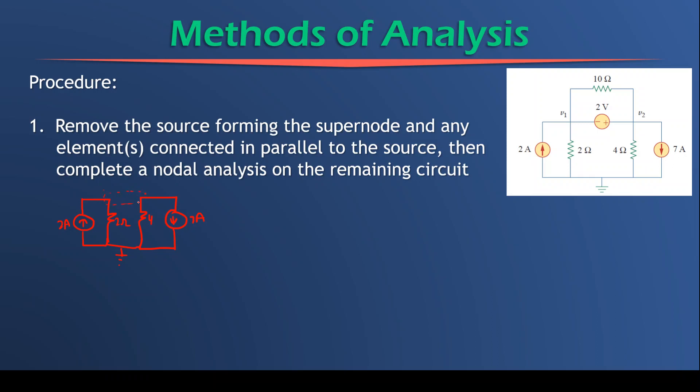Now what then typically happens is that the area where the source and any parallel connected elements is removed is then now referred to as a virtual node. And what does this term virtual mean? It means that we treat it as if it was one node, even though we know that it isn't one node, it's two nodes, V1 and V2, but we treat it as if it was one node.